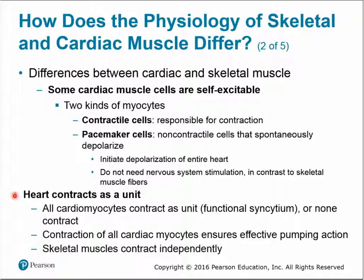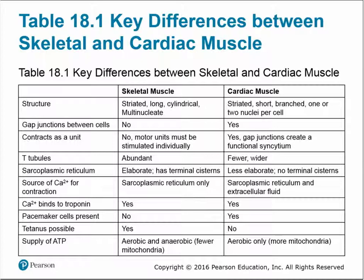Heart muscle also contracts as a unit — the functional syncytium — to ensure effective pumping action, whereas skeletal muscles can contract independently. Structurally, skeletal muscle has long striated cells, while cardiac muscle is striated but shorter and branched. Cardiac muscle contains gap junctions so action potentials and ions pass rapidly from cell to cell, allowing cardiac muscle to contract as a functional syncytium, while skeletal muscle fibers contract individually.